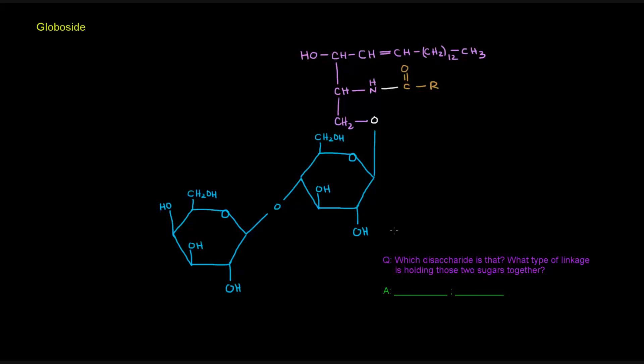And if you looked at this, and I just asked you which disaccharide would that be if it was separated from this sphingolipid, this would be lactose. This disaccharide would be lactose, because this here is galactose, and this is glucose.